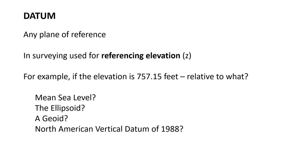In a more general term, a datum is a bigger thing and we have entire datums for the whole U.S. It started with the North American Datum of 1927, then there was the NAD 83, and then another one around 1988. So we recalculate these datums — these horizontal reference planes — every now and then, and hopefully they get better over time as we're able to measure things better.